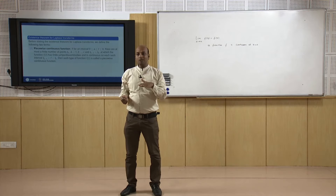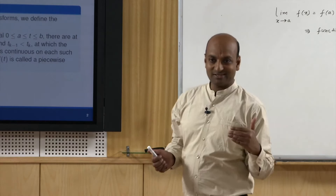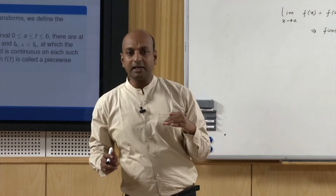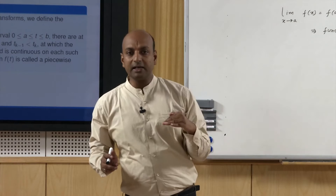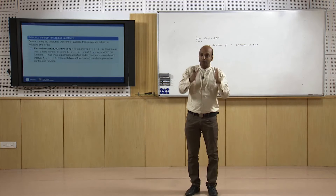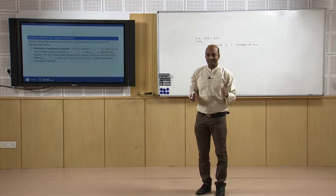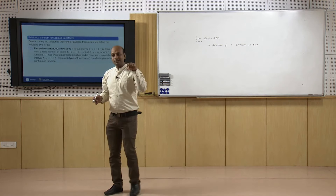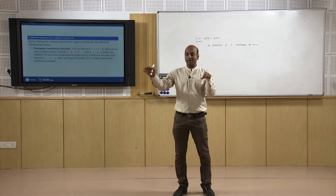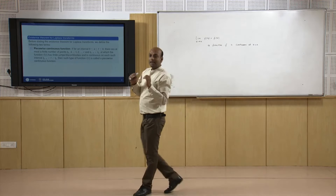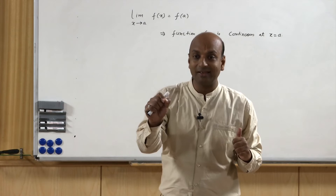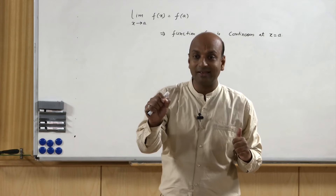If continuity holds over the entire domain, we say the function is continuous over that domain. Now, what do we mean by a piecewise continuous function? Suppose we have an interval and in that interval the function has some discontinuity. But if we break the function into a finite number of sub-intervals, and in each sub-interval the function is continuous, but at the endpoints the function has jump discontinuity, then we say the function is piecewise continuous.